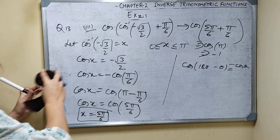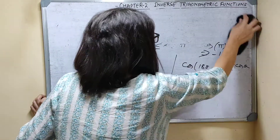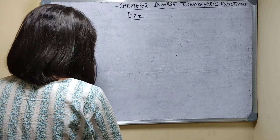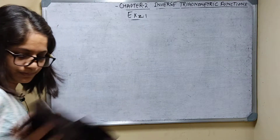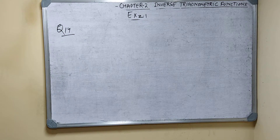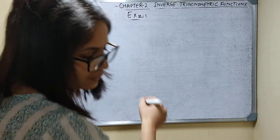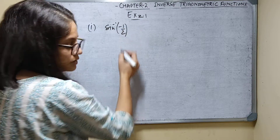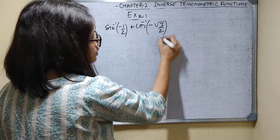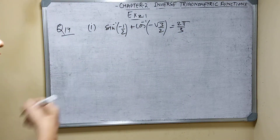Now question number 14, first part. Prove: sin inverse(minus 1 by 2) plus cos inverse(minus root 3 by 2) equals 2 pi by 3. Let sin inverse(minus 1 by 2) equal x and cos inverse(minus root 3 by 2) equal y. I will solve for x first.